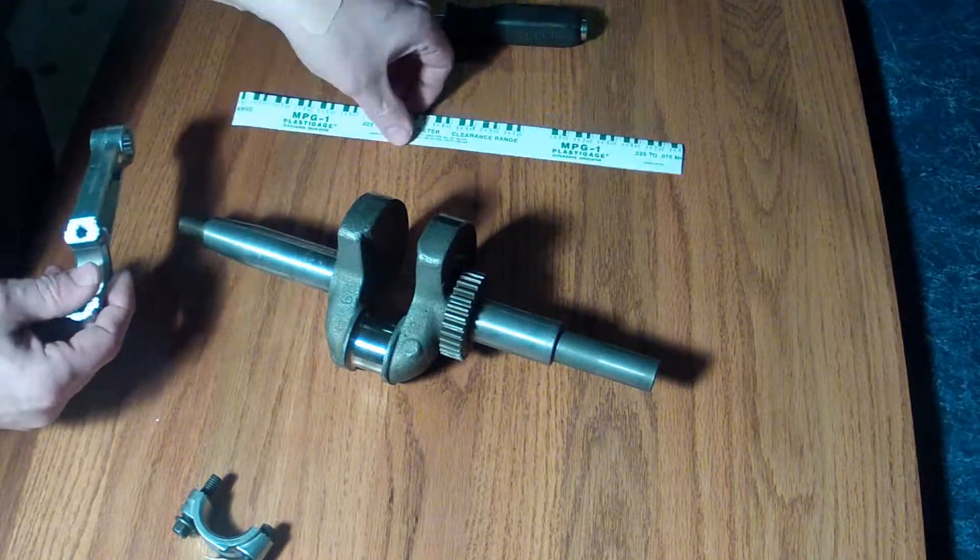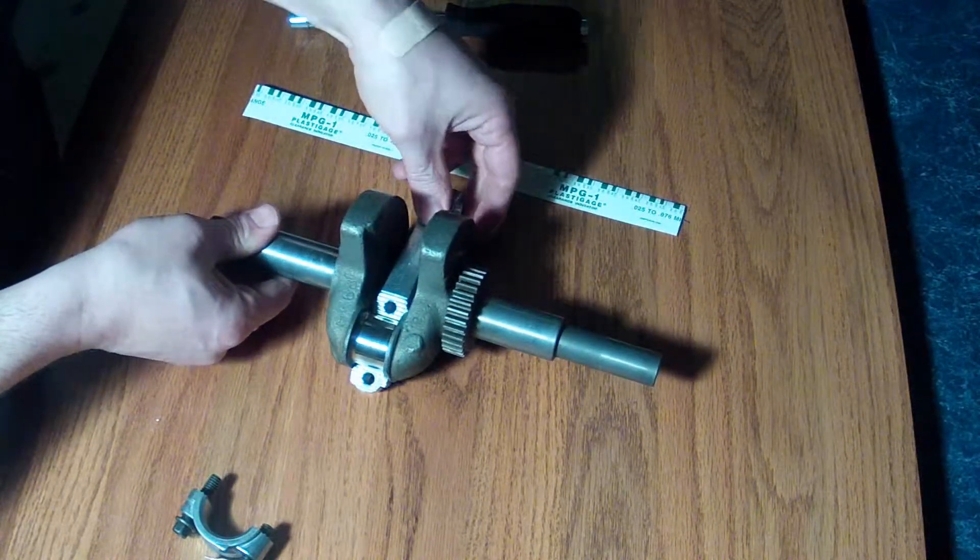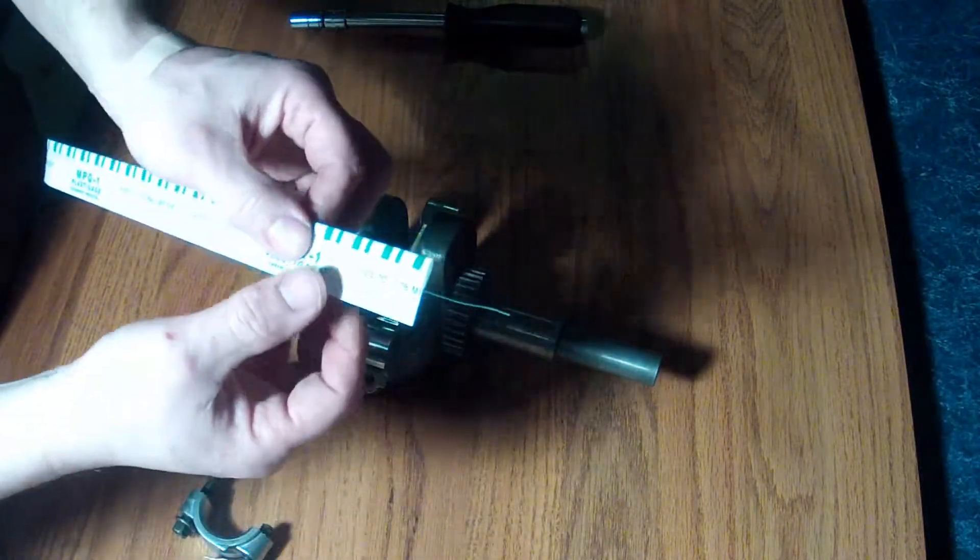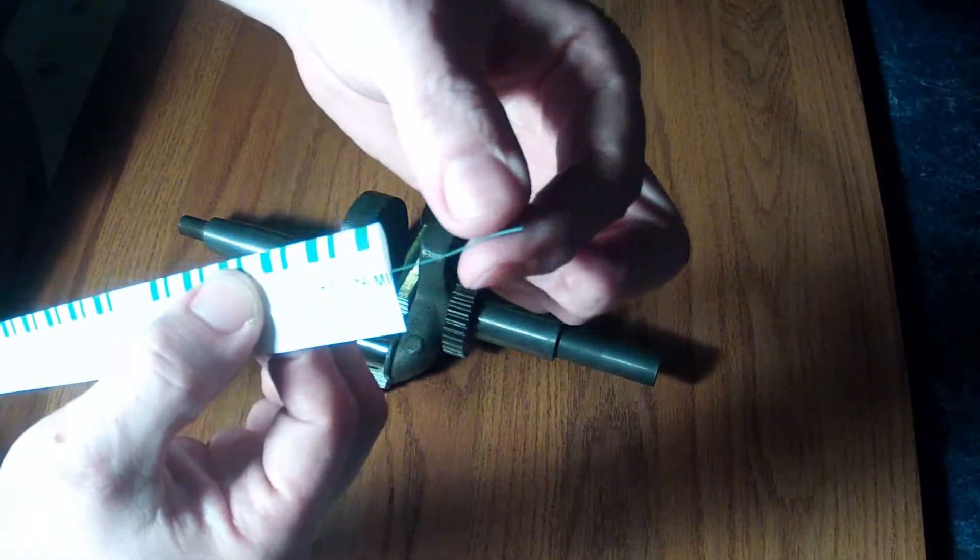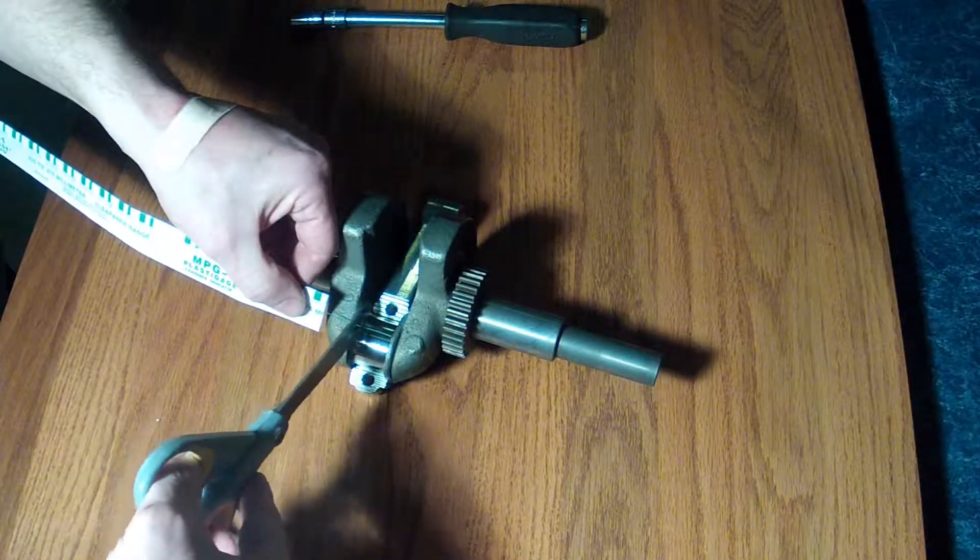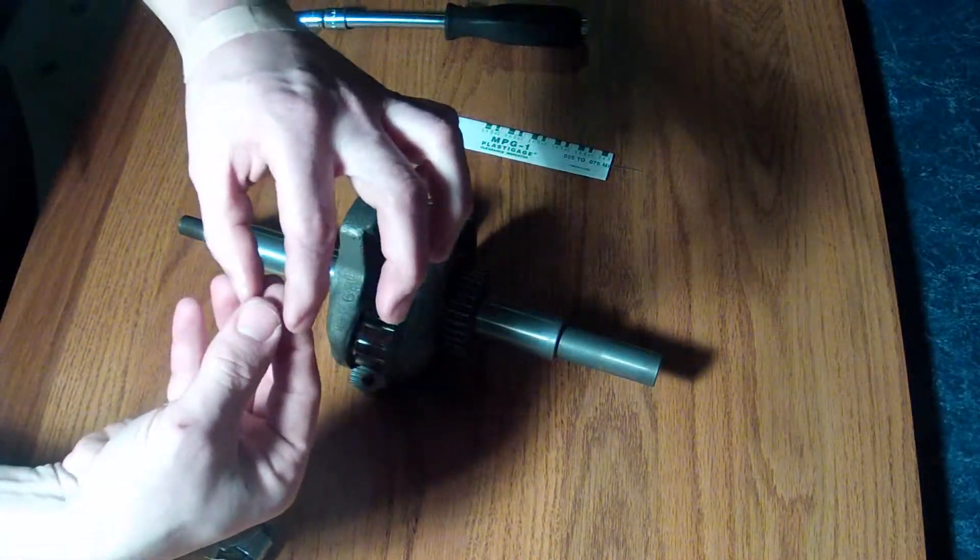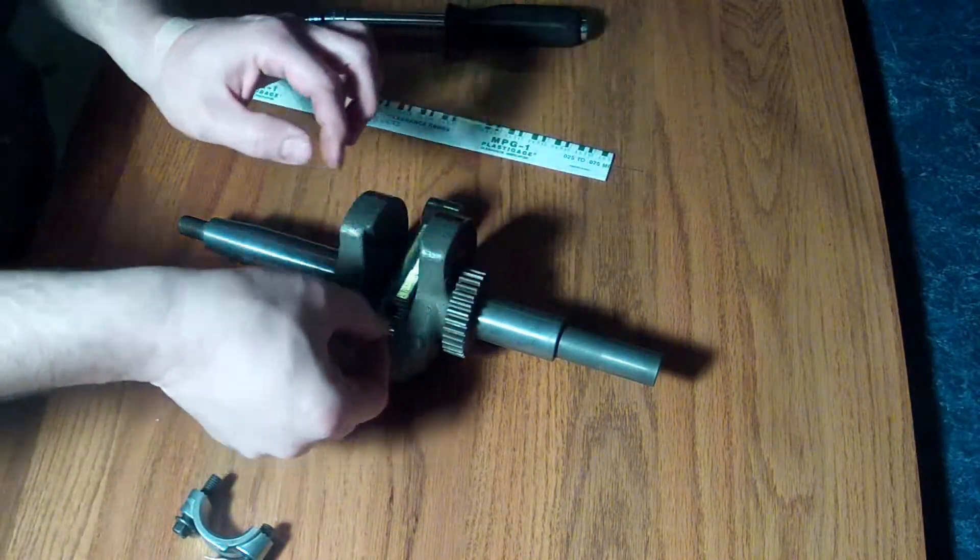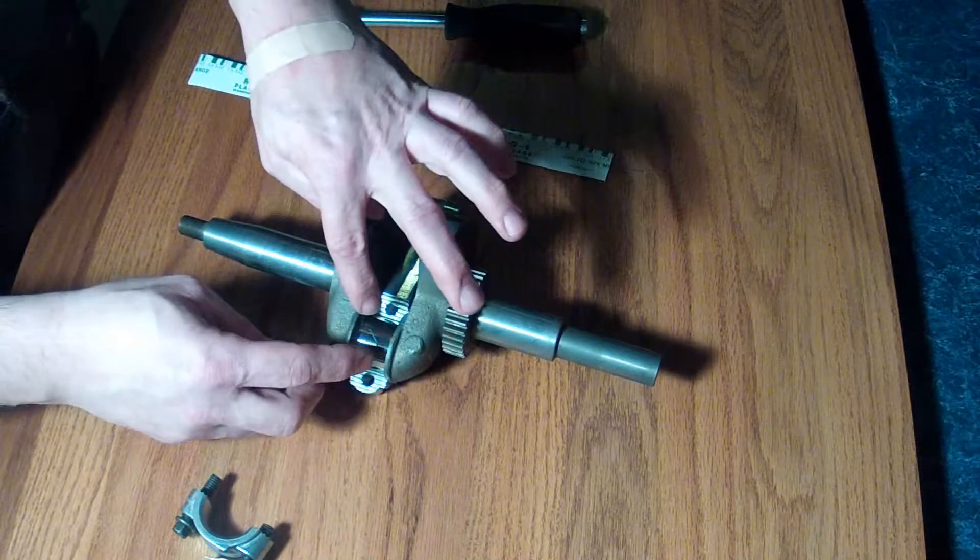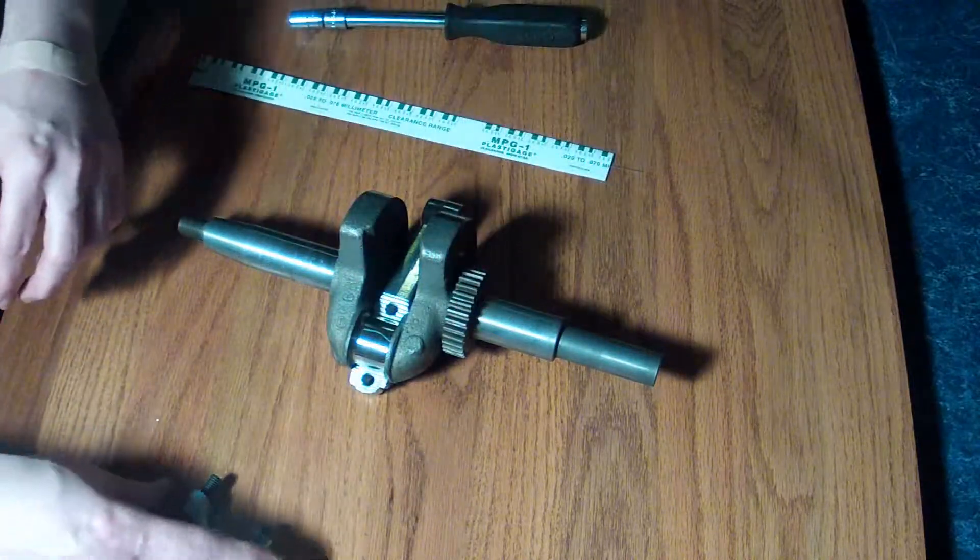So to use PlastiGauge, I'm going to place a connecting rod there. PlastiGauge is actually a thin piece of plastic, in this case green, and I'm going to cut off